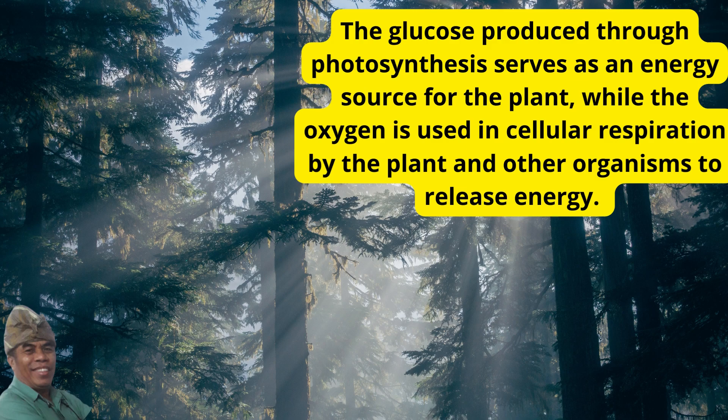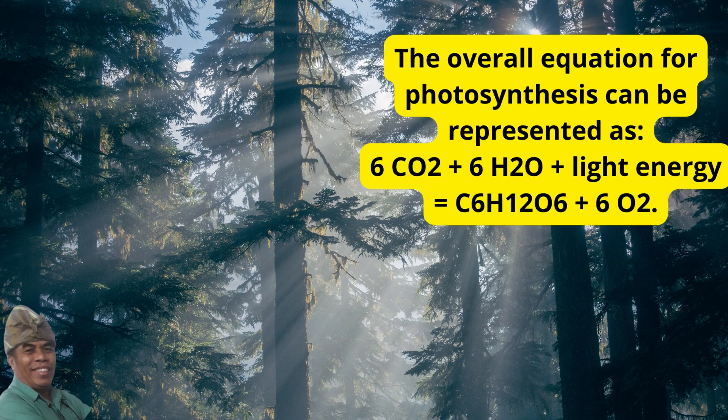The glucose produced through photosynthesis serves as an energy source for the plant, while the oxygen is used in cellular respiration by the plant and other organisms to release energy. The overall equation for photosynthesis can be represented as: 6CO2 + 6H2O + light energy → C6H12O6 + 6O2.